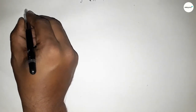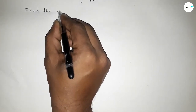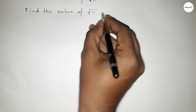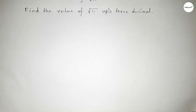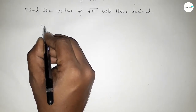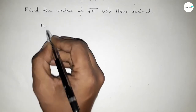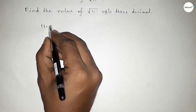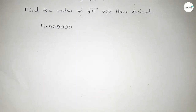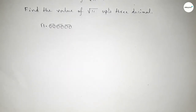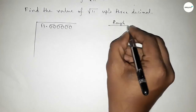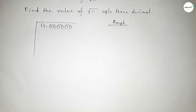Welcome to SI Share Classes. In this video we have to find out the value of root 11 up to 3 decimal places. First, write 11 and put a decimal point, then take six zeros for three decimal places. Now make them as pairs and draw the division symbol, along with a rough space on the side.